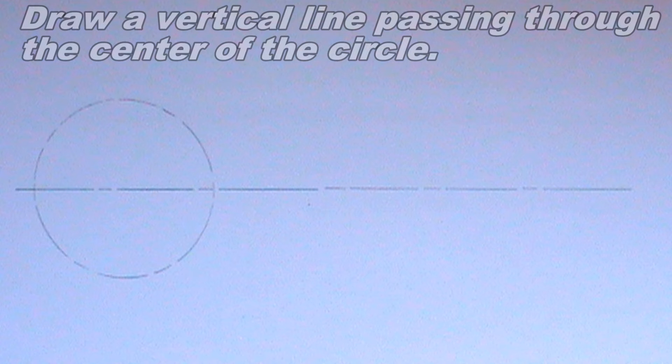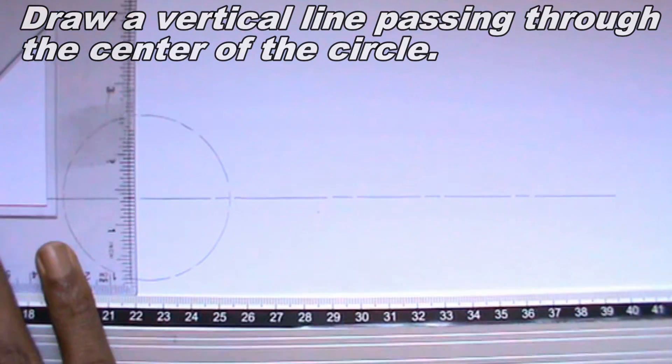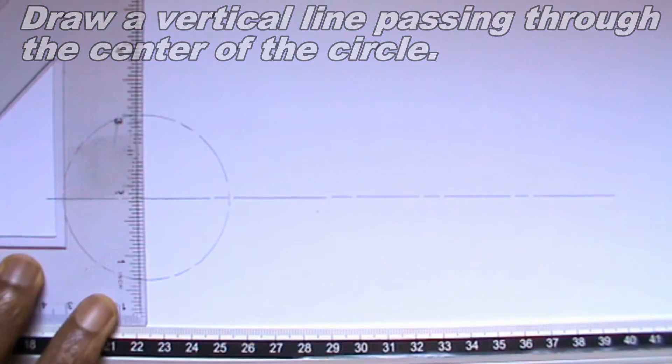Having done that, I will draw a vertical line passing through the center of the circle. The vertical line should also be a thin chain line. I will label the center of the circle O.